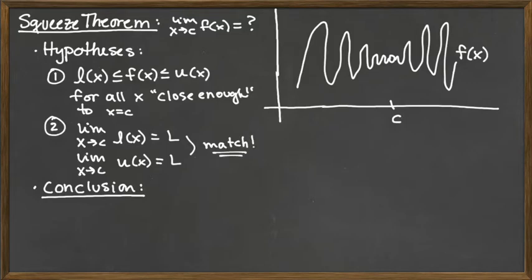That's the squeezing part. If we have upper and lower functions with the function we care about in between, and at the place we care about, at c, we're squeezing the upper and lower together so they approach the same y-value, then our conclusion is that the limit as x approaches c of F(x) is that matching value L.